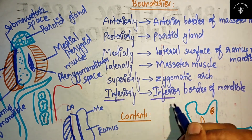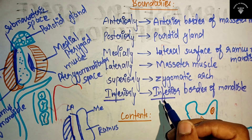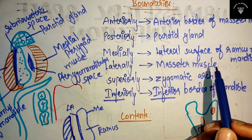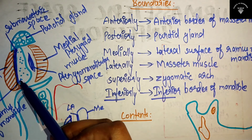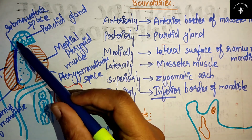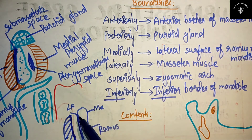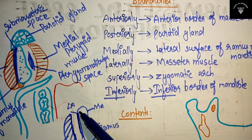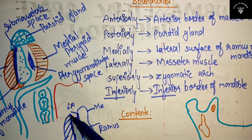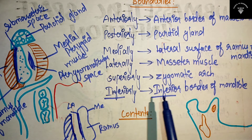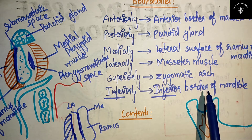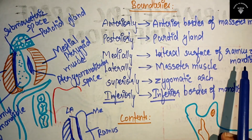You can remember it like this: inferiorly the same as what you saw in pterygomandibular space infection. To summarize the boundaries: anteriorly — anterior border of masseter muscle; posteriorly — parotid gland; medially — lateral surface of ramus of mandible; laterally — masseter muscle; superiorly — zygomatic arch; inferiorly — inferior border of mandible. These are the boundaries of submasseteric space — just remember this diagram.